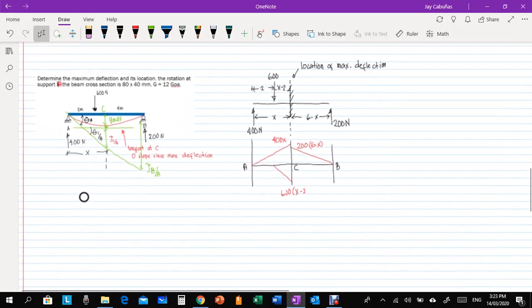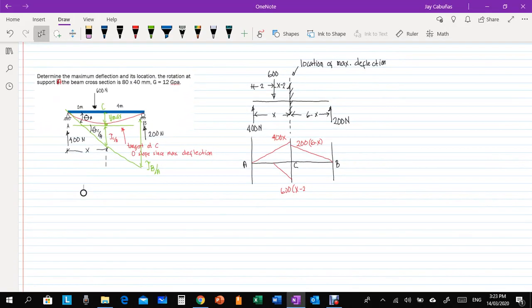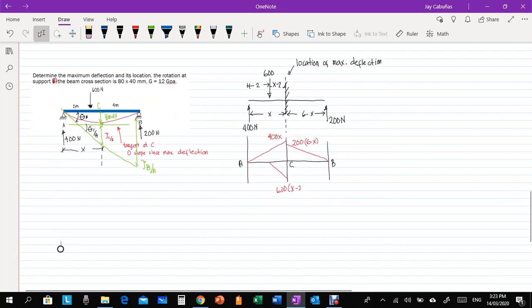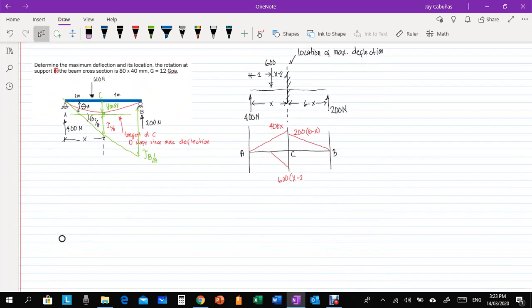Okay, to continue, I have here a new example. So first, we determine the maximum deflection location and then the rotation at support A of the beam. So this example, you might have solved the last time using the double integration method. So I have here a load, 600 N, acting 2 meters from joint A and 4 meters from joint B.